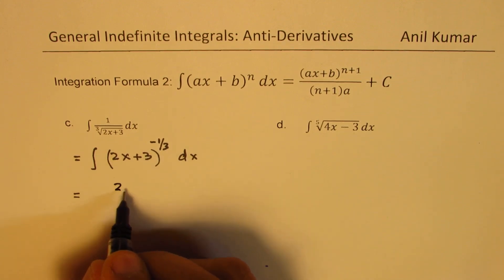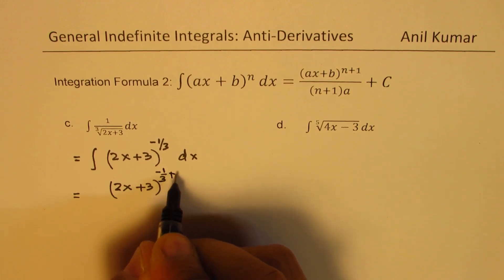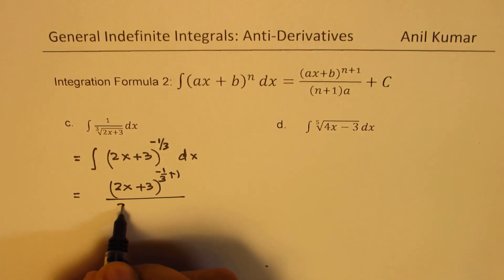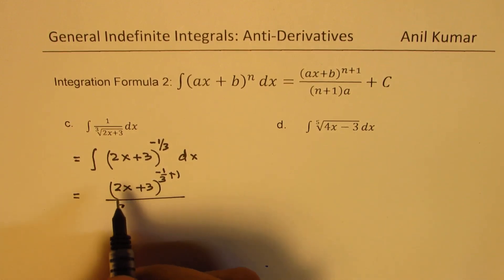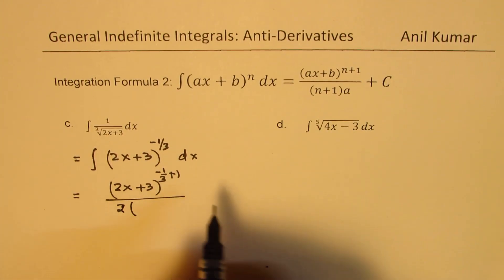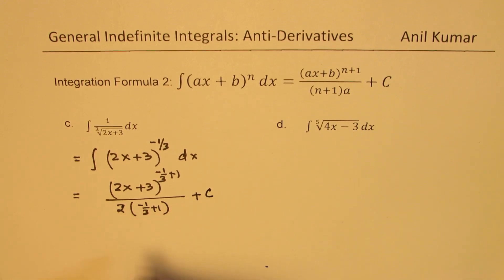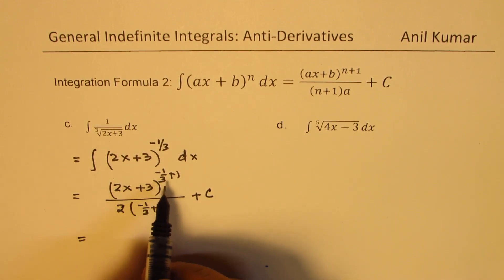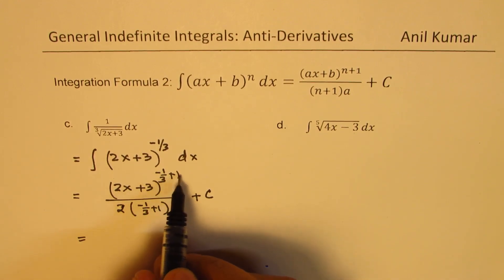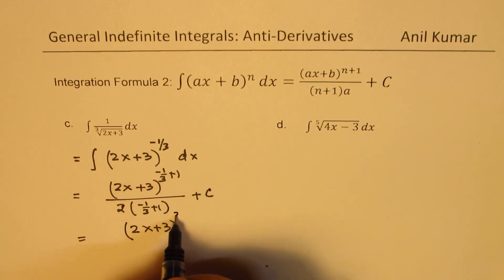The integral for this will be 2x plus 3 to the power of minus 1 over 3 plus 1 divided by 2 times minus 1 over 3 plus 1 plus a constant C. That gives you, when you take away 1 from 3, you get 2 over 3. So we could write this as 2x plus 3 to the power of 2 over 3.